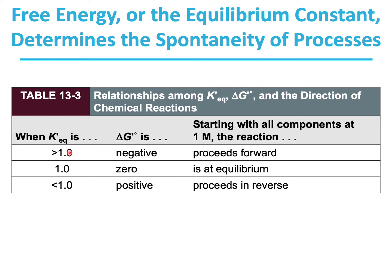When K-equilibrium is greater than 1, delta G is negative and the reaction proceeds forward. When the equilibrium constant is 1, delta G is 0 and the reaction is at equilibrium. When the equilibrium constant is less than 1, delta G is positive and the reaction proceeds in the reverse direction.